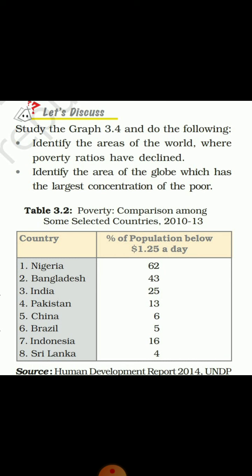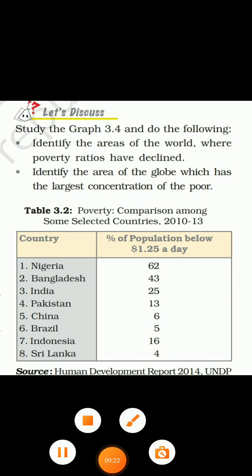Two discussion questions based on the graph in your textbook: first, identify the areas of the world where the poverty ratio has declined; second, find out the areas of the world with the largest concentration of the poor. In the next video, we will discuss the causes of poverty.